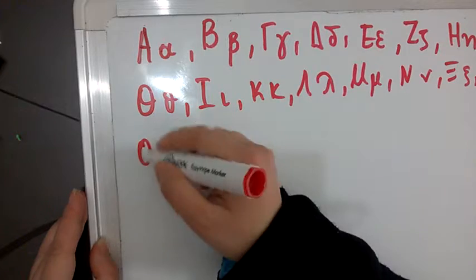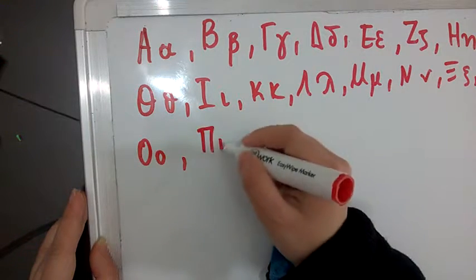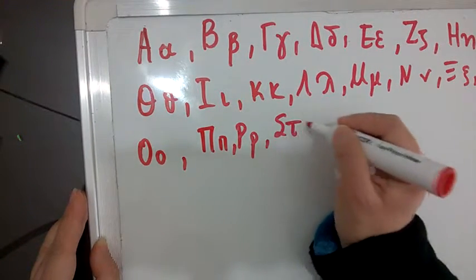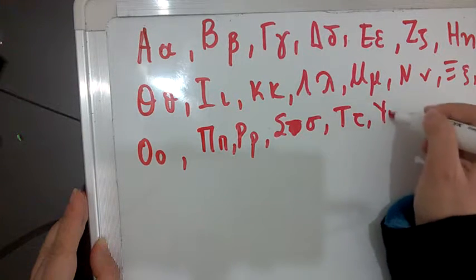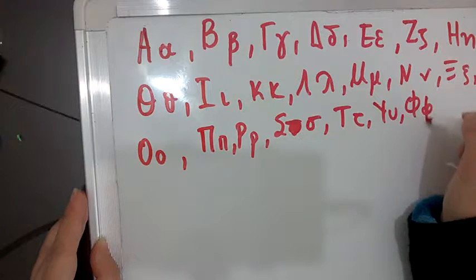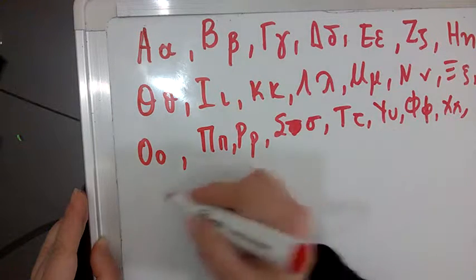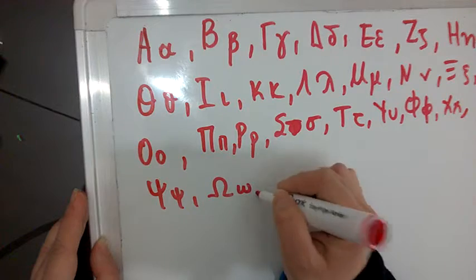Pi, Rho, Sigma, final Sigma, Tau, Upsilon, Phi, Chi, Psi, Omega.